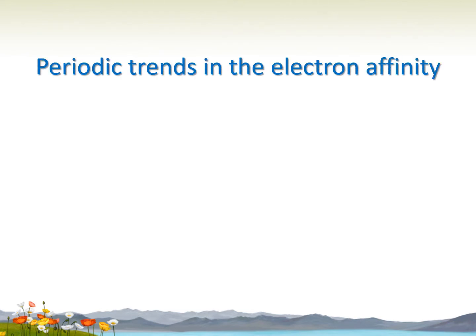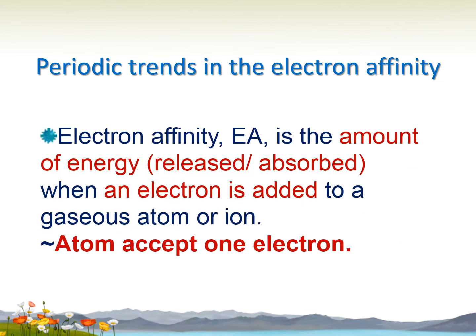Looking at periodic trends in electron affinity, the definition of electron affinity: EA is the amount of energy needed to be released or absorbed when an electron is added to a gaseous atom or ion.